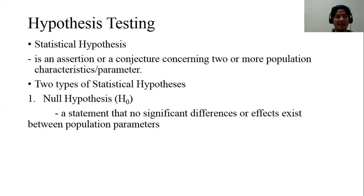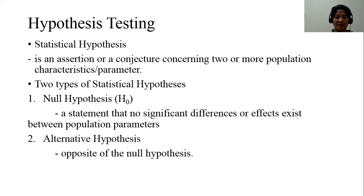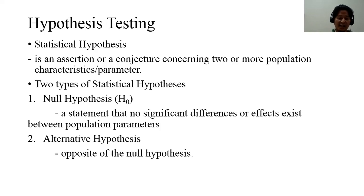The second type is the alternative hypothesis, which is the opposite of the null hypothesis. It states that something did happen — the parameter may have decreased (less than), increased (greater than), or simply changed in either direction. Later on we'll call these one-tail or two-tail tests respectively.